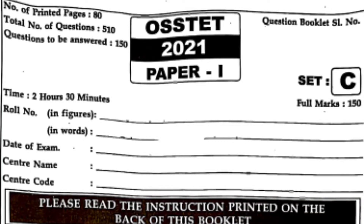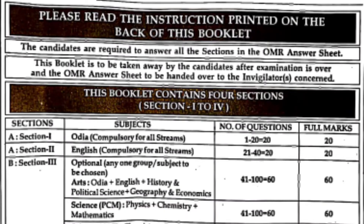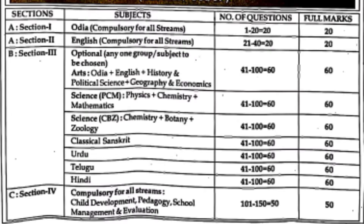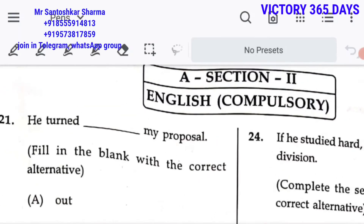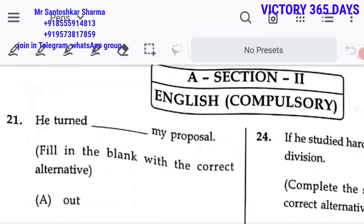Hello friends, welcome to my YouTube channel Victory 365 Days. Today in this video we are talking about the Odisha Secondary School Eligibility Test high school contractual teacher posts exam — that is the English part, Section 2: English for everyone.